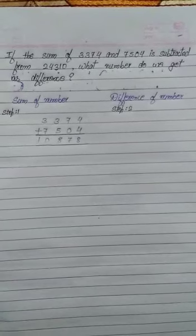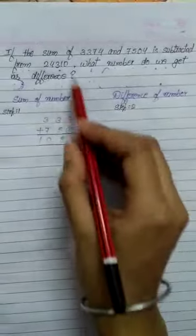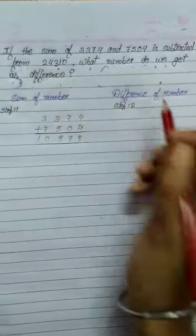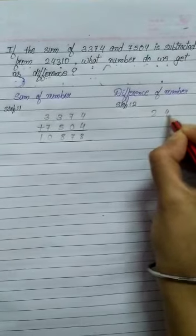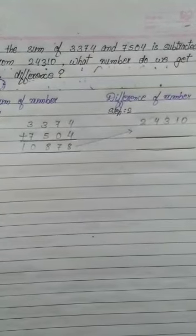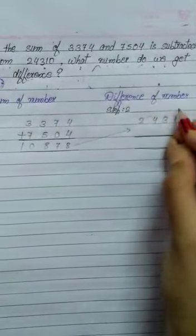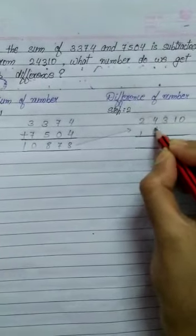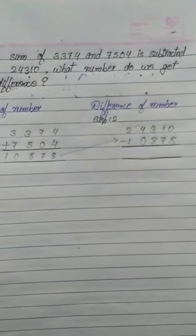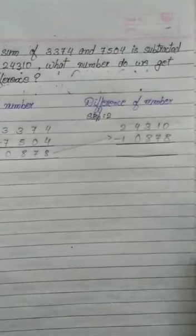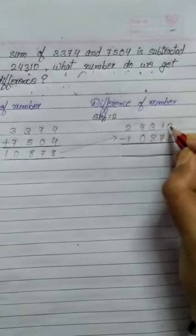Now the second step is the difference of numbers. First, write the number given in the question — that is 24,310. Then subtract the number we got from the addition — that is 10,878. Now let's subtract. 0 minus 8 is not possible, so we borrow 1 from this one. This one becomes 0 and this 0 becomes 10.